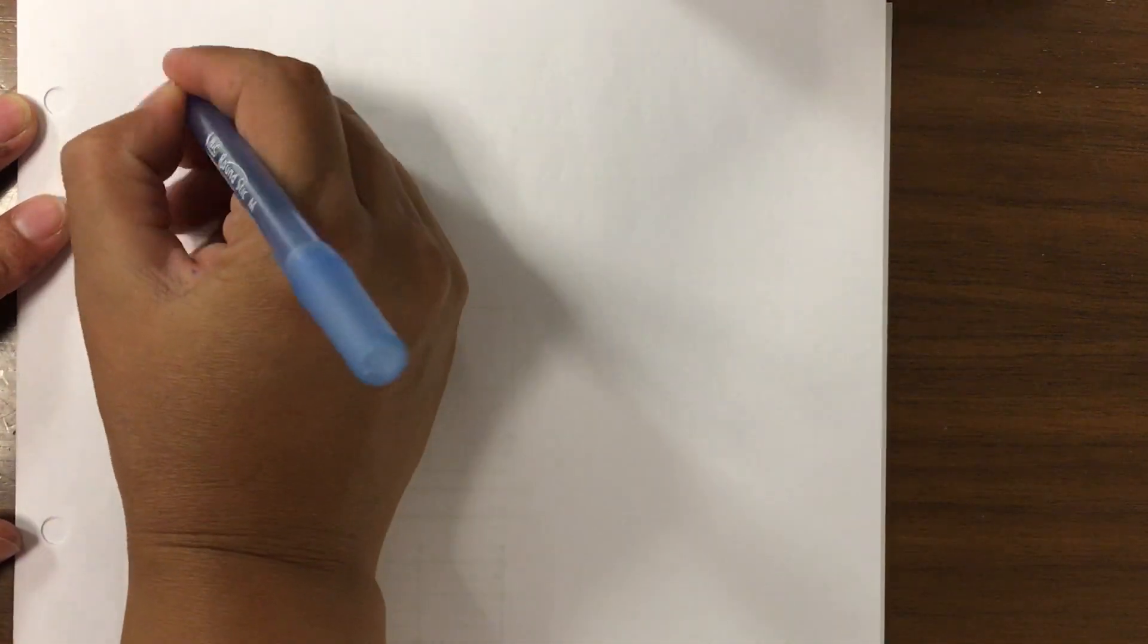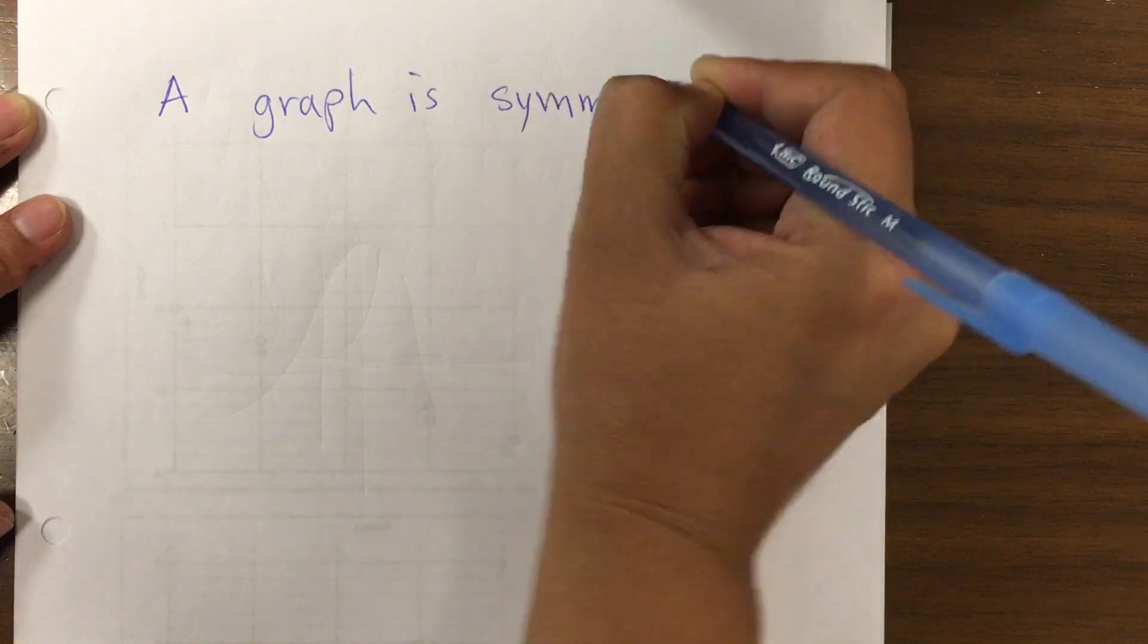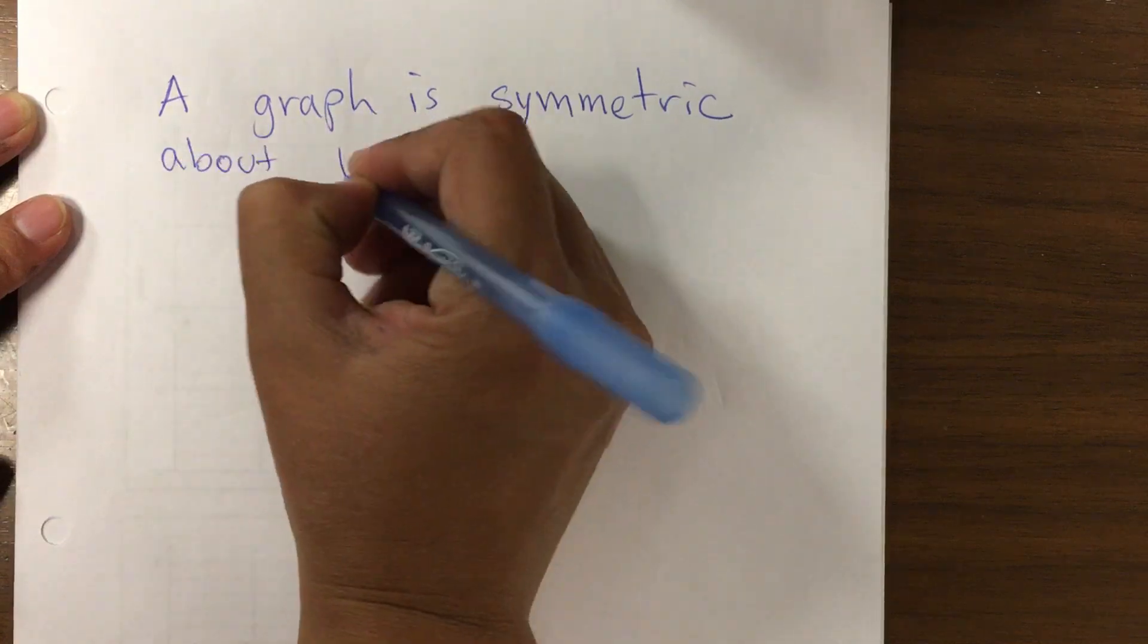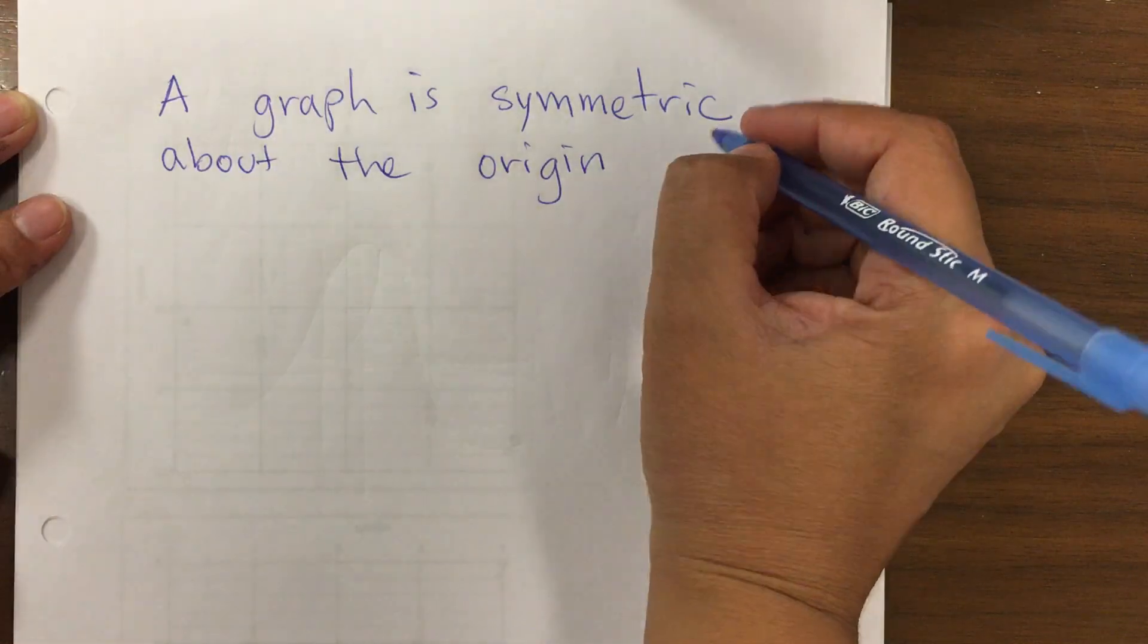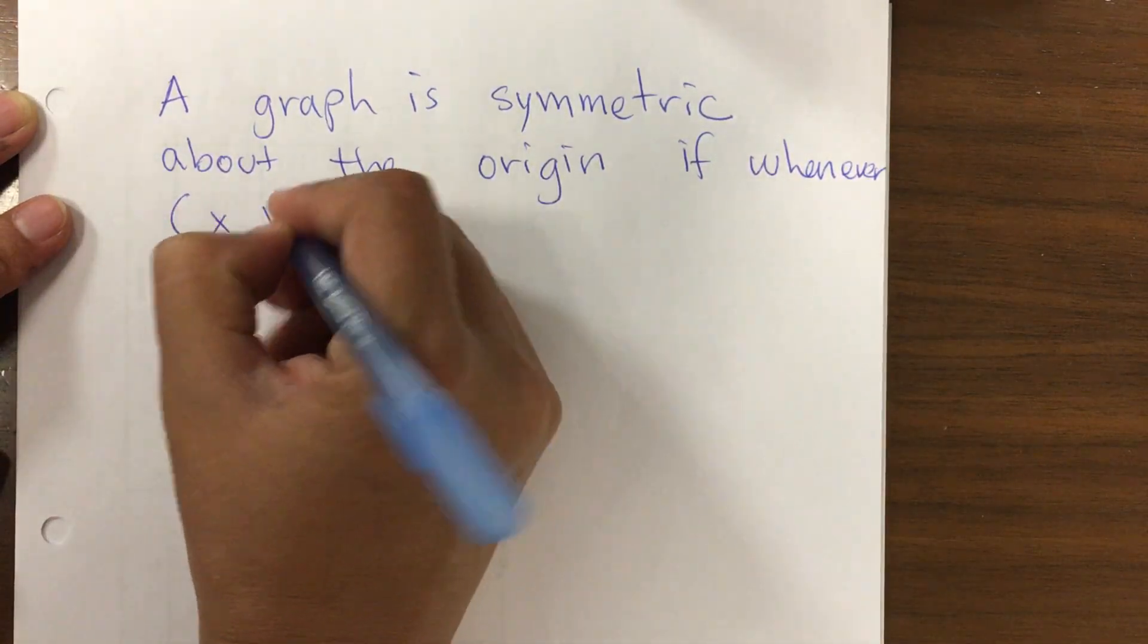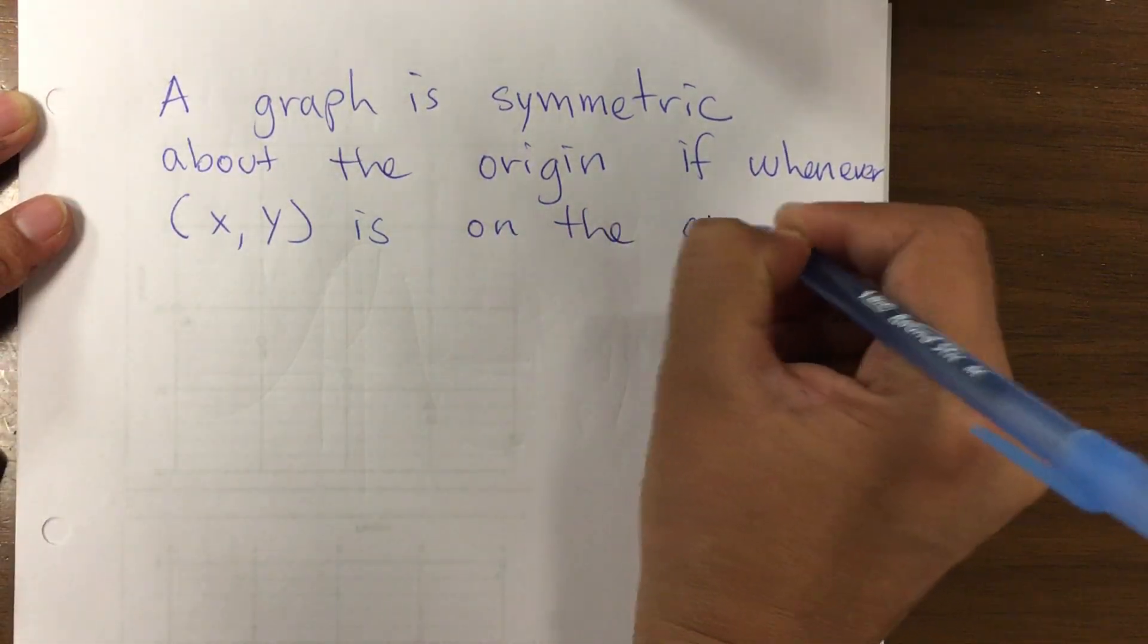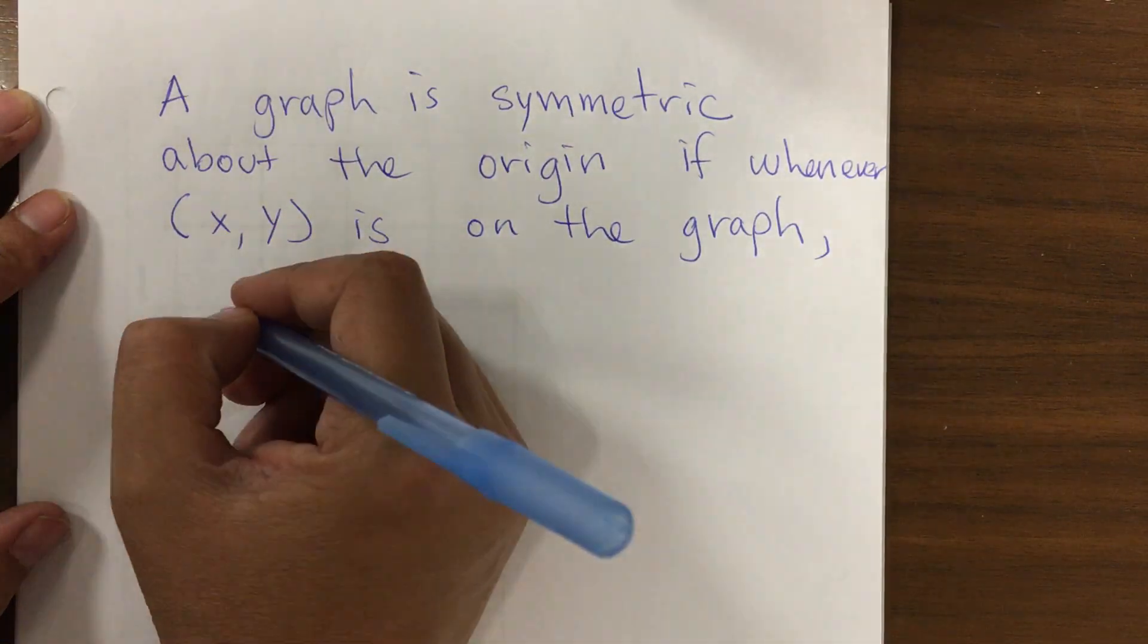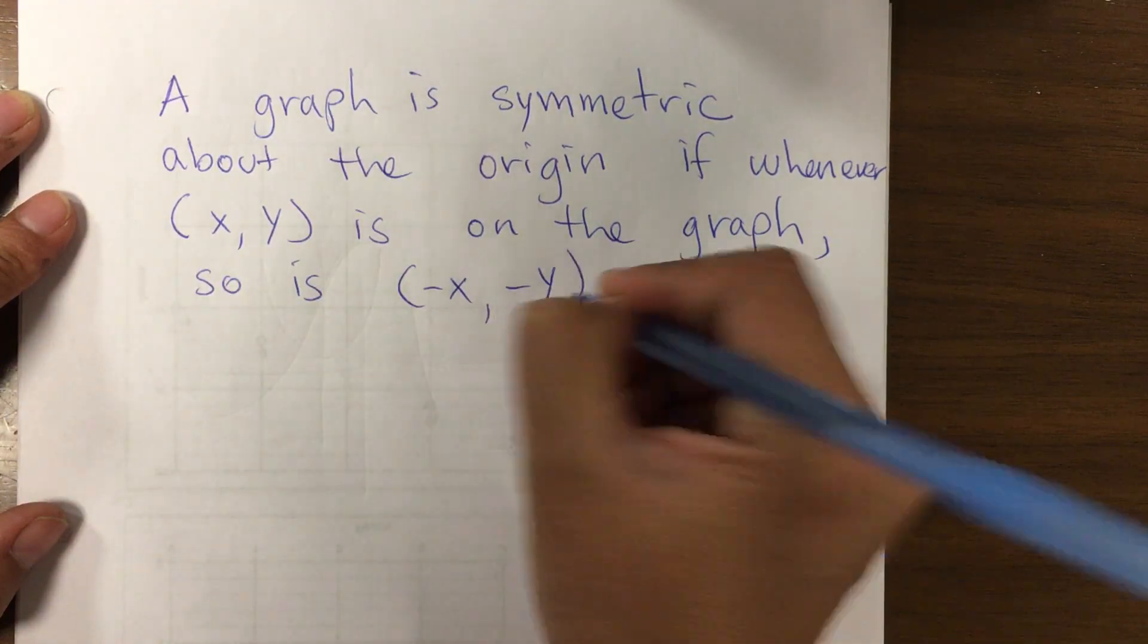A graph is symmetric about the origin if whenever (x,y) is on the graph, so is (-x,-y). And what does that mean?